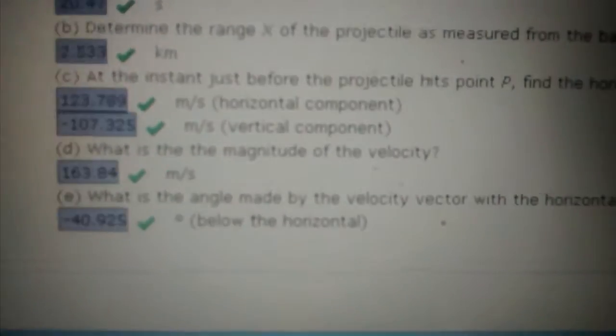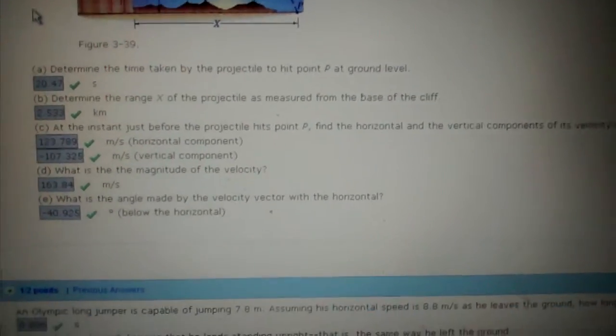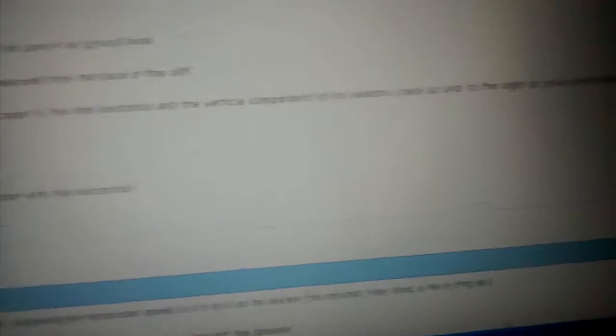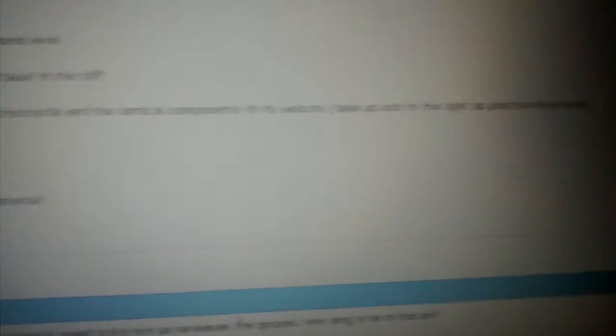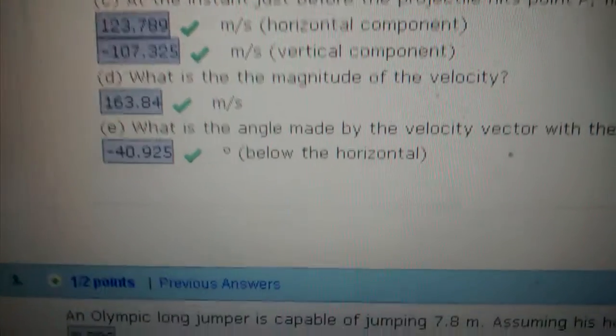In my last video, I made a mistake. I went from C, which asks about the horizontal and vertical components of the velocity vectors, to E, which is what is the angle made by the velocity vector. But I forgot poor D. Oh, I'm so sorry, D.